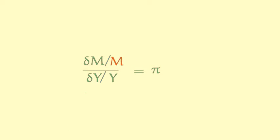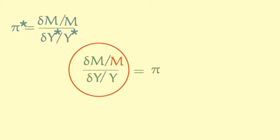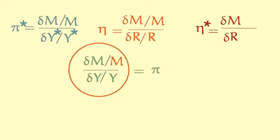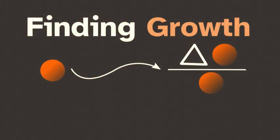This concept is known as elasticity. In this case, the domestic income elasticity of imports. If we repeat the process with the other exponents, we get that pi star is the foreign income elasticity of exports and that eta and eta star are the relative price elasticities of imports and exports respectively. Finally, a and a star are simply constants with no important theoretical interpretation.